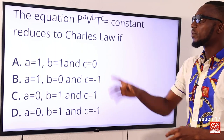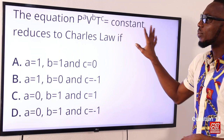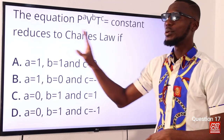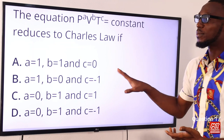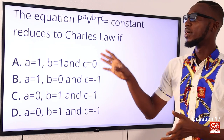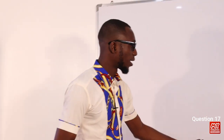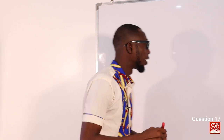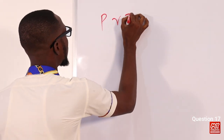Question 17: The equation P^a × V^b × T^c = constant can be reduced to Charles' Law if certain values of a, b, and c are chosen. We need to determine those values.